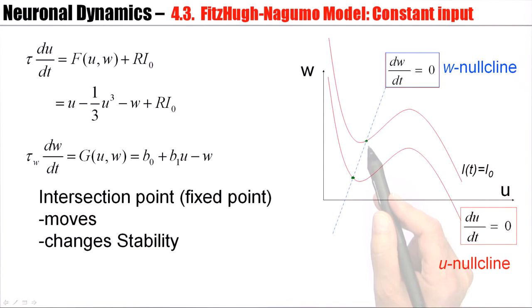Note that if we have a different slope of the blue curve, for example, if the w-nullcline looks like this, then it's not just the stability of the fixed point which may change, but it's also the number of fixed points which may change. I have three fixed points here for zero current. I have only one fixed point here for positive current.